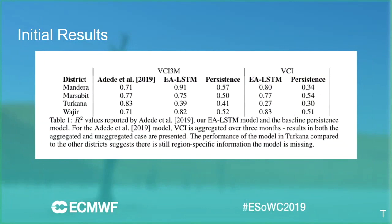Another reason we chose this agricultural drought index was that there have been studies that have used machine learning methods, so we compared against them. Their predictions are for specific counties under a scheme where remittances are paid if there is a drought. We tend to perform better or similarly in most counties except Turkana. One important caveat: the Adidi et al. paper uses a three-month aggregated mean per county, whereas we're producing pixel-level predictions and aggregating them — so we believe we would outperform them given our much higher granularity and resolution.